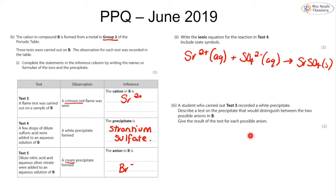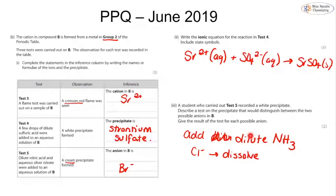A student recorded a white precipitate in test five and needs to distinguish between two possible anions. We add dilute ammonia: if it was chloride, the precipitate dissolves; if it was bromide, it does not dissolve. We must always distinguish between halides using dilute or concentrated ammonia. In this case we specifically need dilute ammonia, as concentrated ammonia would not give the result we are looking for.